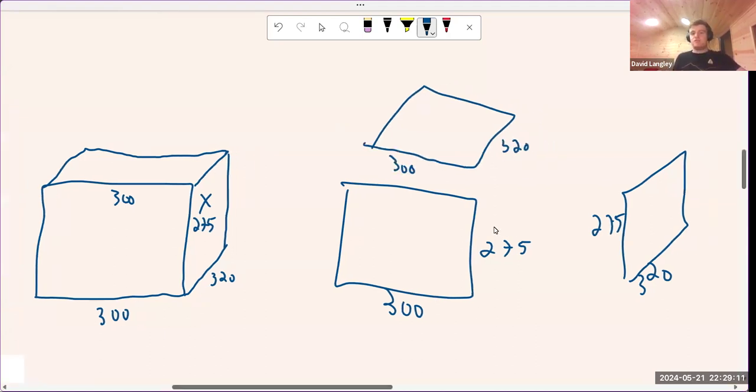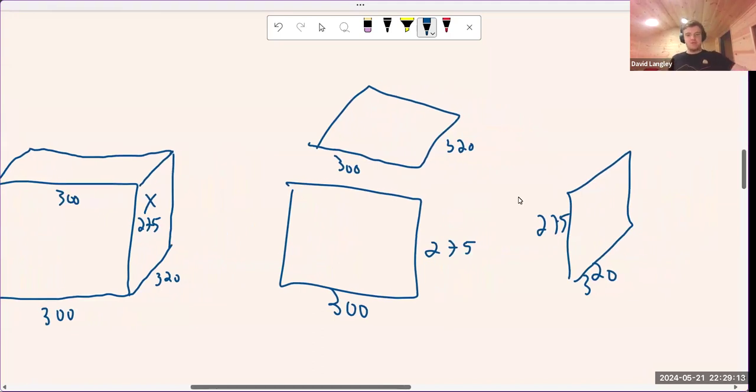And so we have three different rectangles. We can find the area of each. 300 by 320 is going to be 96,000 centimeters squared. 300 by 275 is 82,500.